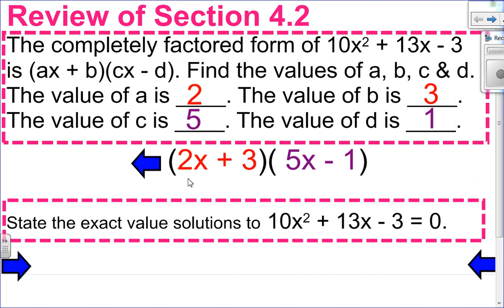a and c are the numbers in front of x. a goes with the factor that is adding, and c goes with the factor that is subtracting. So a and c are 2 and 5. The b value is positive 3. And since it says minus d, and I'm subtracting 1, I only put the 1 in — the negative is already accounted for by that subtracting.